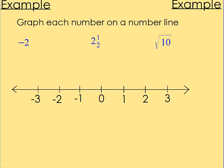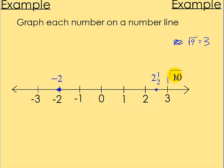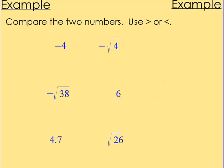Here are some examples — graph each number on a number line. Negative 2 is straightforward, it's right there. Two and one half is halfway between 2 and 3, so it shows up right about 2.5. For the square root of 10, find nearby perfect squares — the square root of 9 equals 3, and since 10 is a little bigger, the square root of 10 is just a little more than 3, so we place it just past 3 on the number line.